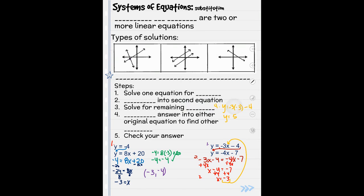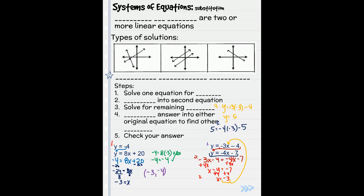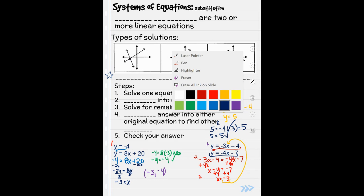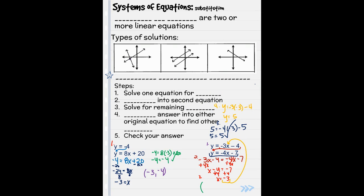Fifth, final, important step. Check your answer. So now I'm going to plug both my x and my y into the equation that I didn't use. So y is 5 equals negative 4 times negative 3 minus 7. If that right-hand side equals 5, then this is our solution. It does. 5 equals 5, so everything checks out. So our answer here is the point negative 3, 5. This is what we're looking for.